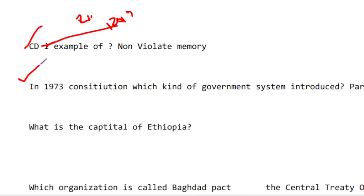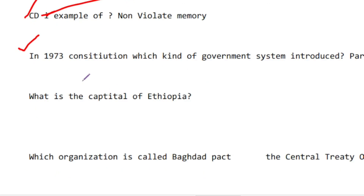The presidential system was introduced in Pakistan, which Imran Khan wants to re-establish. The capital of Ethiopia is Addis Ababa.